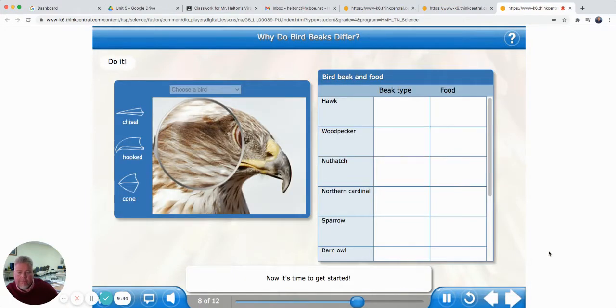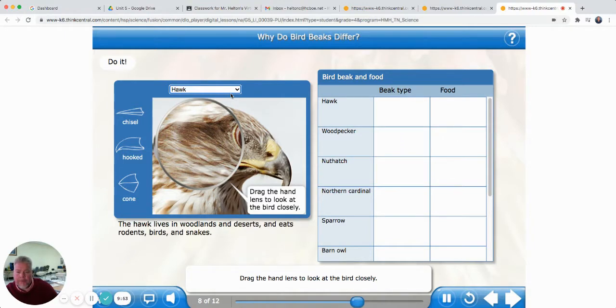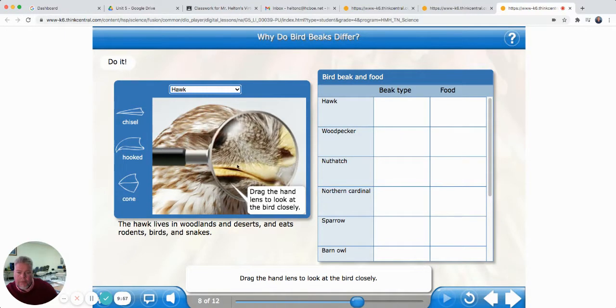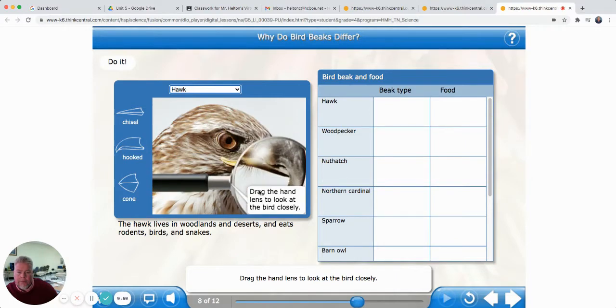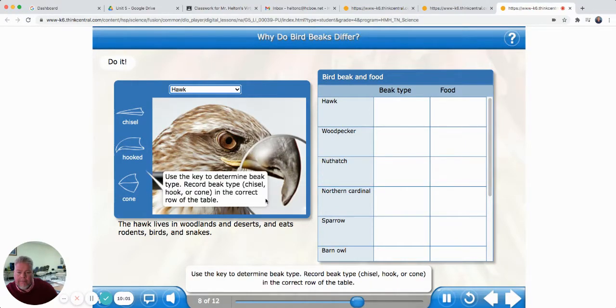Check your plan. Did you set a goal and include these steps? Look closely at each bird using the digital field guide. Identify each bird's beak type. Identify the kinds of food that each bird eats. Record this information in the table. If your plan does not include these steps, you can change it. Once you've finished, click the next button to move on. I think we did pretty well. Now it's time to get started. Choose a bird from the menu. All right, let's choose a hawk. Drag the hand lens to look at the bird closely.